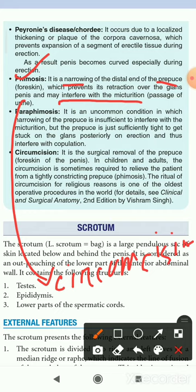Circumcision is the surgical removal of the preputial skin or foreskin of the penis. In children and adults, circumcision is sometimes required to relieve the patient from phimosis. Additionally, in some religious contexts, Muslims and Jews practice circumcision.